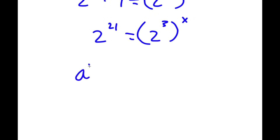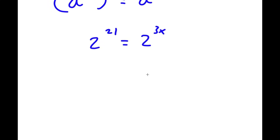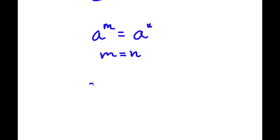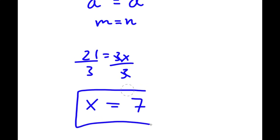Now, if I have something in the form a to the power of m to the power of n, this equals a to the power of m times n. So 2 to the power of 3 to the power of x equals 2 to the power of 3x. So I have 2 to the power of 21 is equal to 2 to the power of 3x. Since the bases are equal, the exponents must be equal too: 21 equals 3x. Dividing both sides by 3, these cancel out and I'm left with x is equal to 21 divided by 3, which is 7. So x equals 7 is my answer.